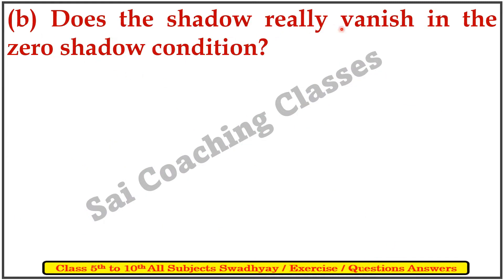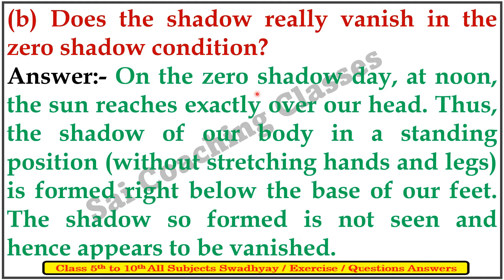B. Does the shadow really vanish in the zero shadow condition? Answer: On the zero shadow day at noon, the sun reaches exactly over the head. Thus, the shadow of our body in the standing position, without stretching hands and legs, is formed right below the base of your feet. The shadow so formed is not seen by the person and appears to have vanished.